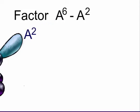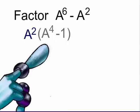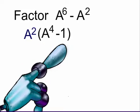So if we factor out an a squared, that leaves us with a to the fourth minus one in parentheses.